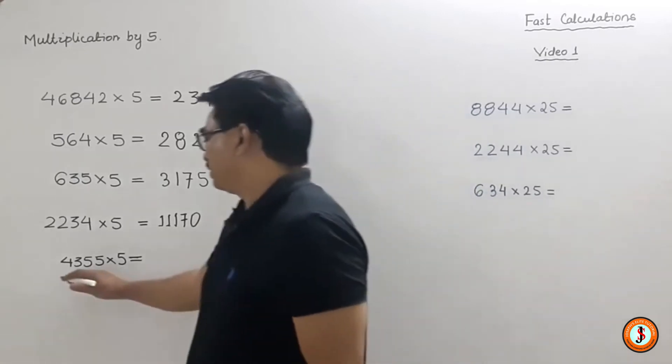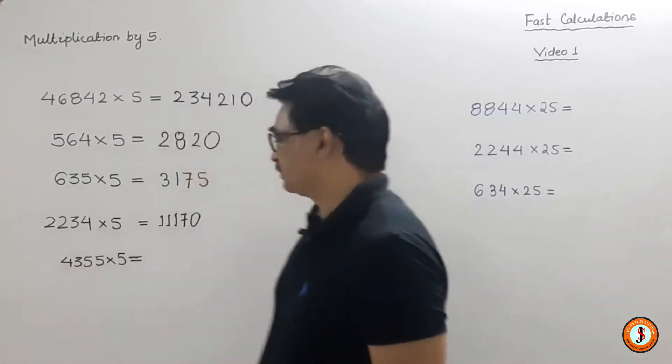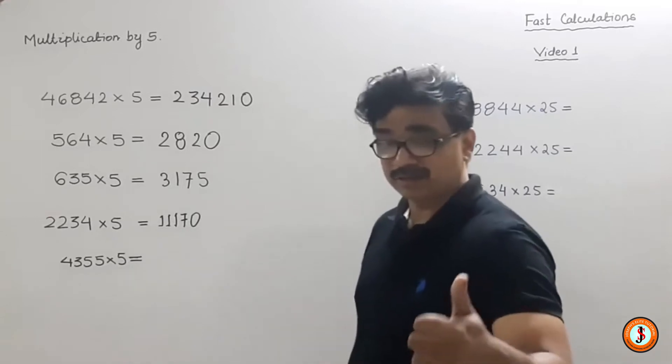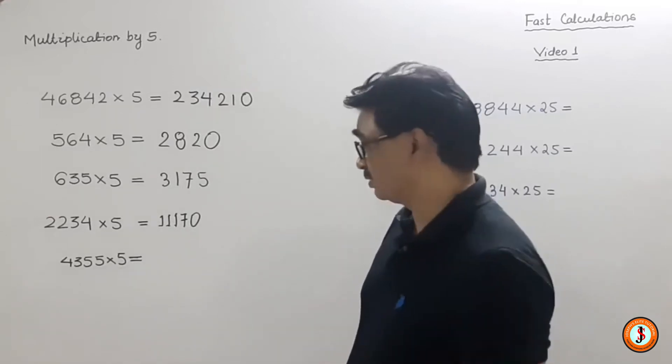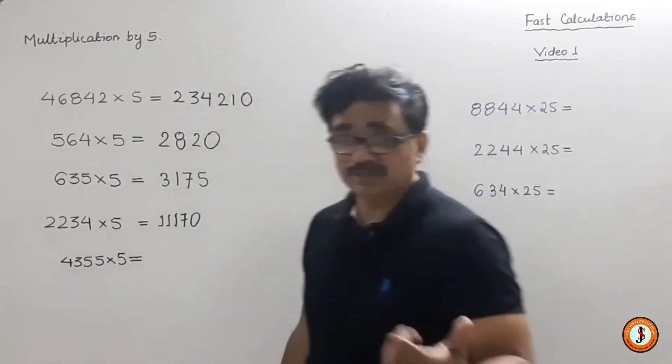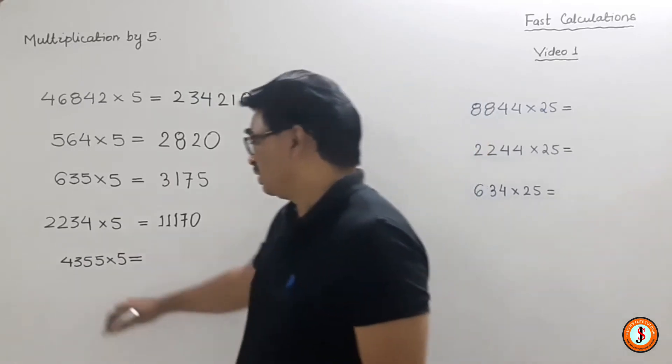So this is the case of 4355. So 4000 will be 2000. Let's say there are 300, so 2150. Now 300 will be 150, so 2150.